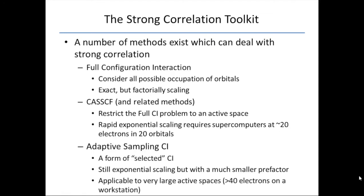And one last topic I'm going to be talking about, especially today, is adaptive sampling CI, which is a form of selected CI. In full CI and CASSCF, you're solving a full CI problem. Whereas in selected CI, you're only going to use the important determinants to form your wave function. It's still exponentially scaling, but it has a much smaller prefactor. You can get to very large active spaces, more than 40 electrons easily on a workstation in a matter of minutes.